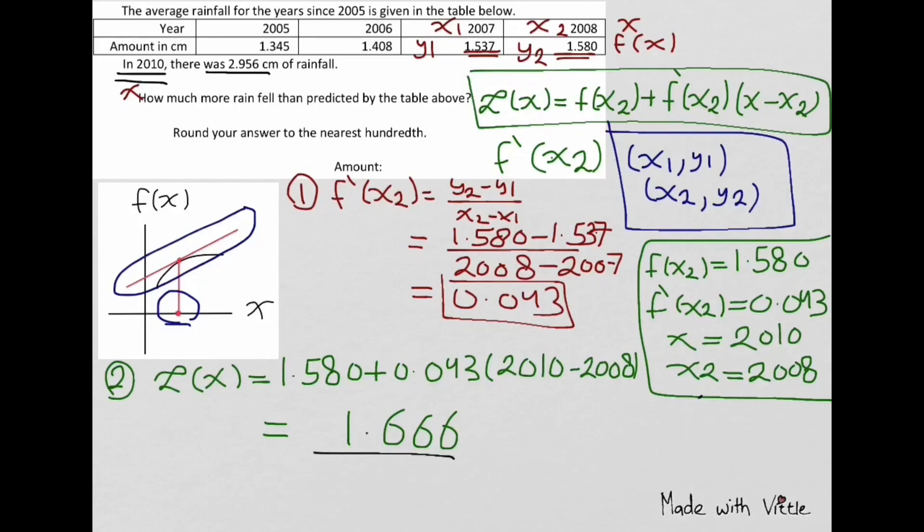This value is different from the actual one. Because in 2010, the average amount of rain was 2.956.